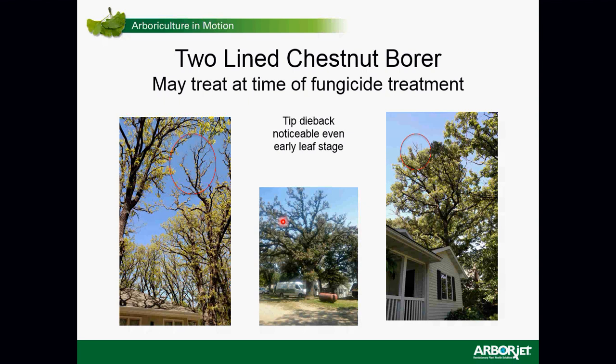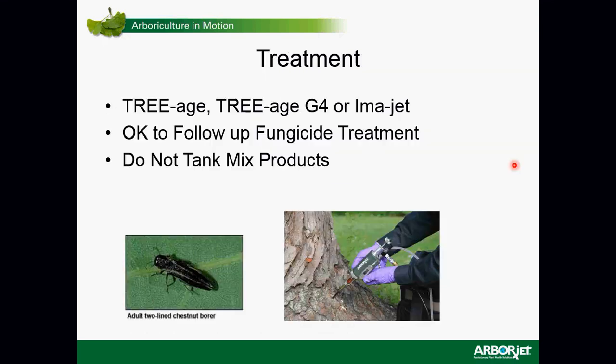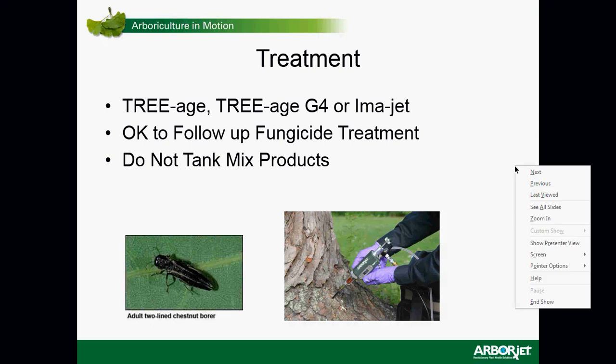I do recommend a follow-up insecticide treatment. You can use the same injection sites — put in the fungicide first, then follow up with an insecticide treatment. Look for terminal dieback; if you see a lot of tip dieback, those trees are good candidates for both fungicide and insecticide treatment. Triage, Imicide G4, and Imige are all effective against two-line chestnut borer. Do not mix products in with the fungicide — use the same injection site but apply the insecticide after the fungicide.